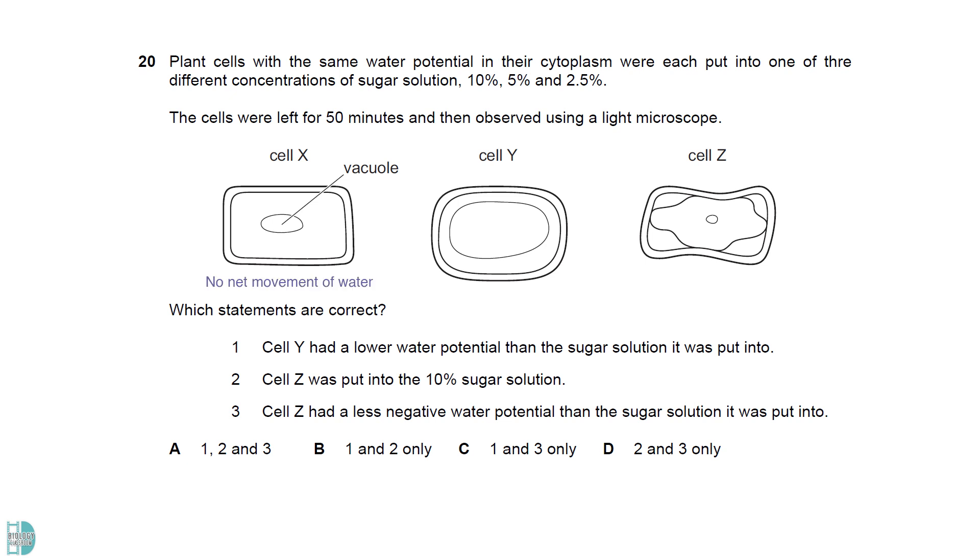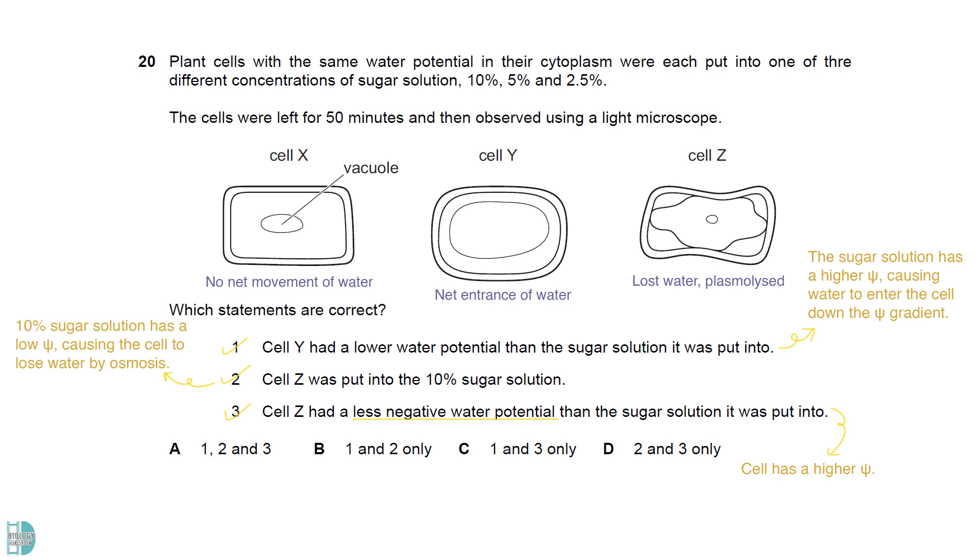Cell X has no net movement of water by osmosis. Cell Y has a net entrance of water, while cell Z lost water and is plasmolyzed. 1 is correct. The sugar solution has a higher water potential, causing water to move into the cell by osmosis down the water potential gradient. 2 is correct. 10% sugar solution is very concentrated and has a low water potential, causing the cell to lose water by osmosis. 3 is correct as well. Cell Z has a higher water potential than the sugar solution.